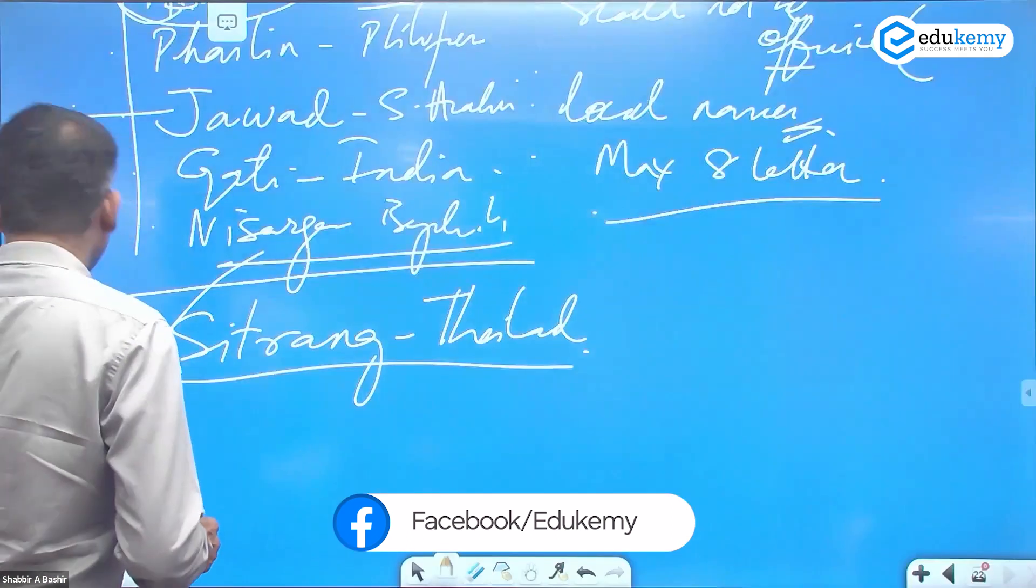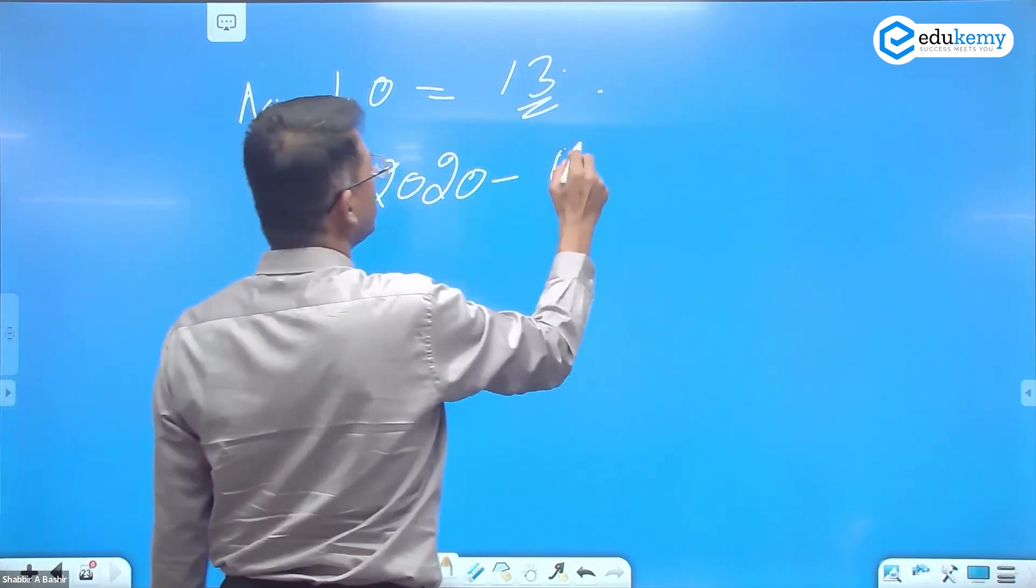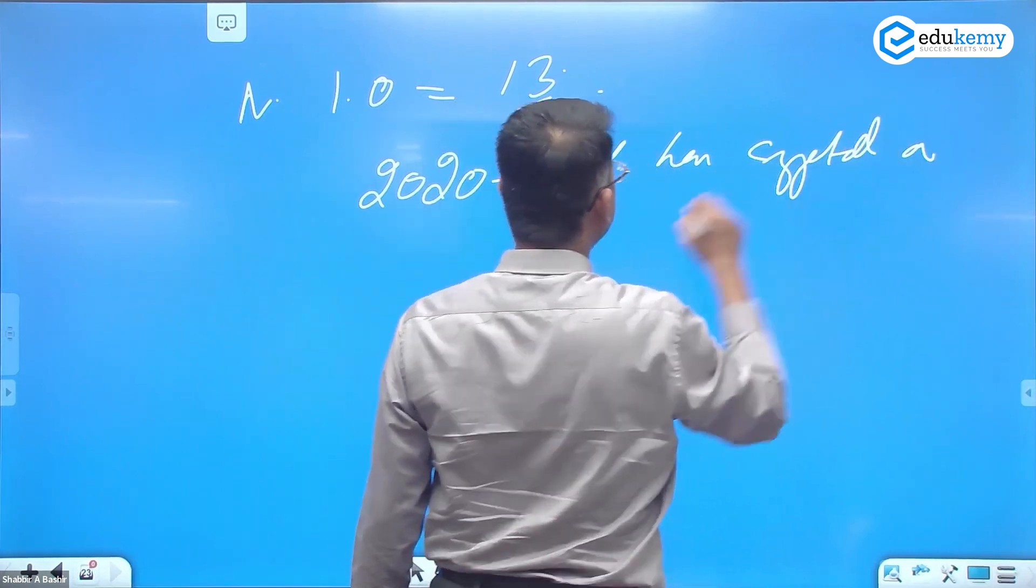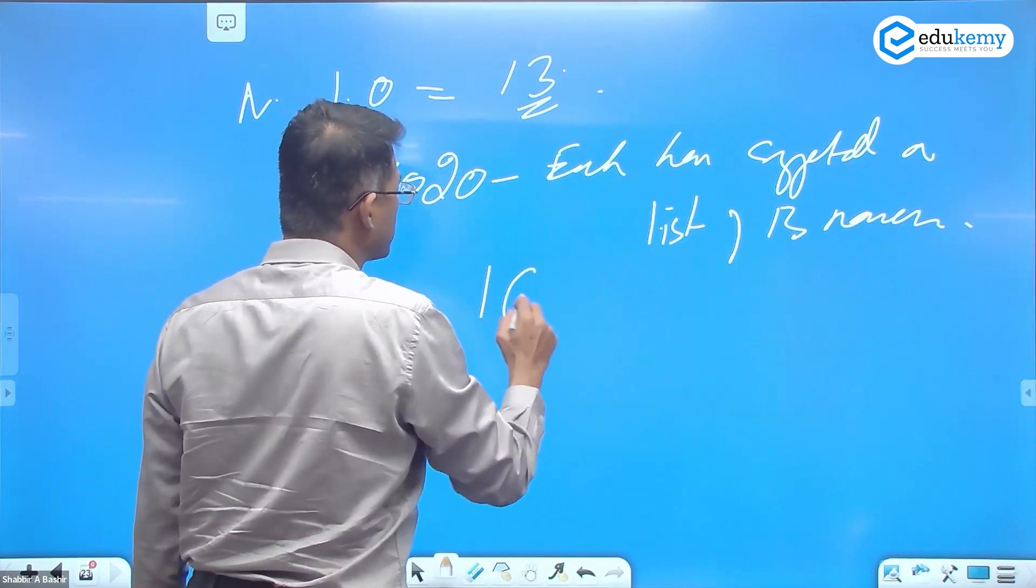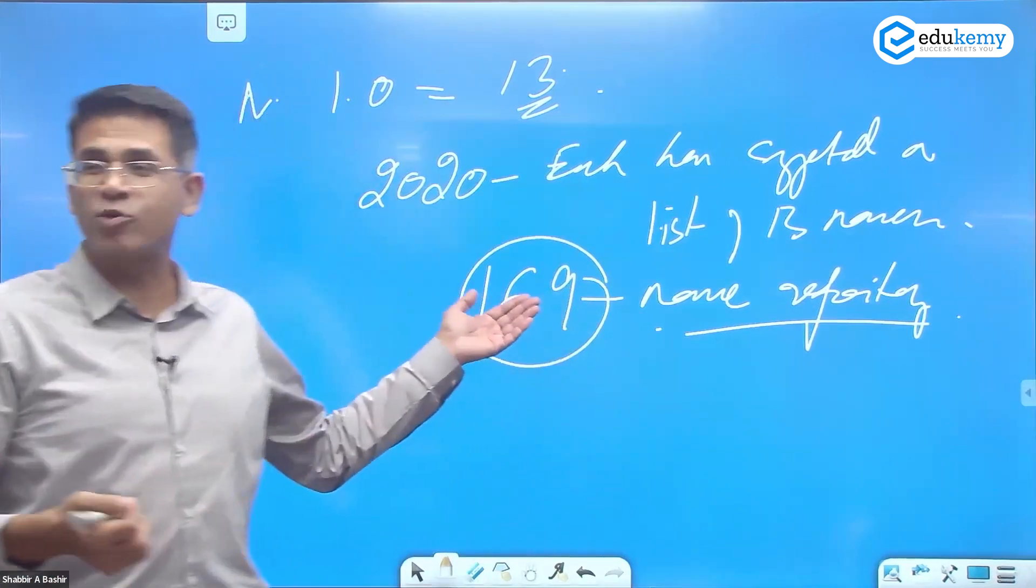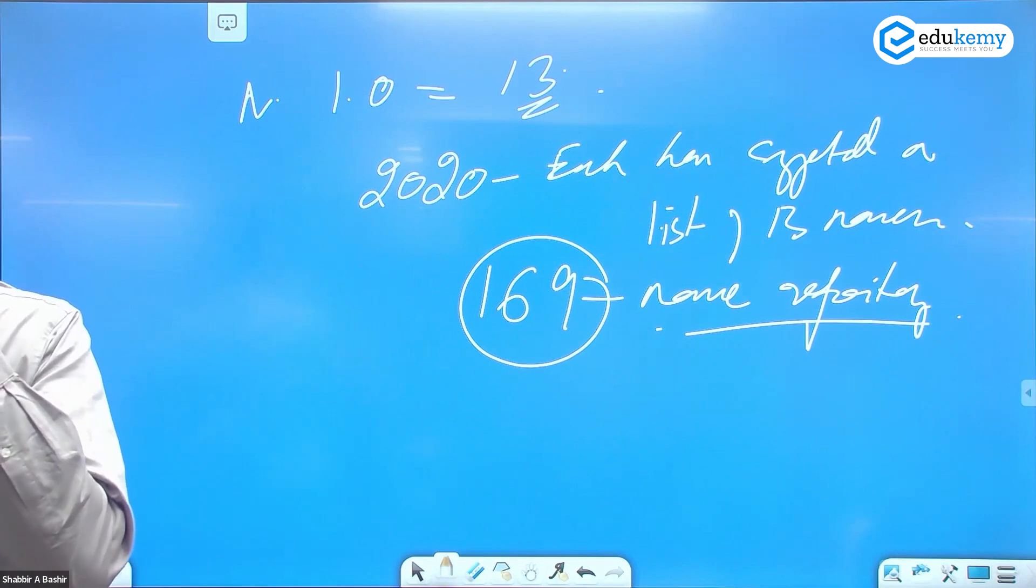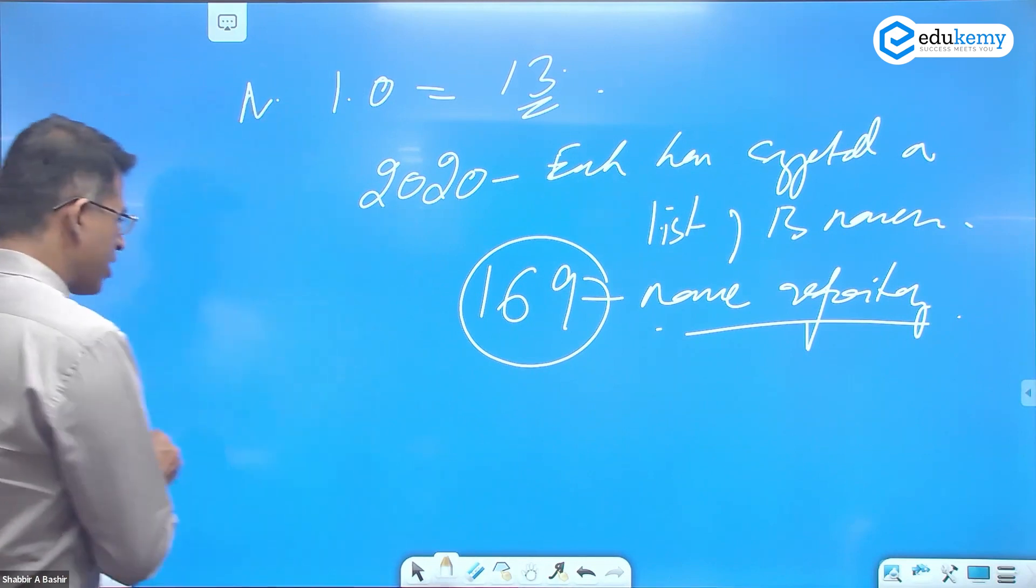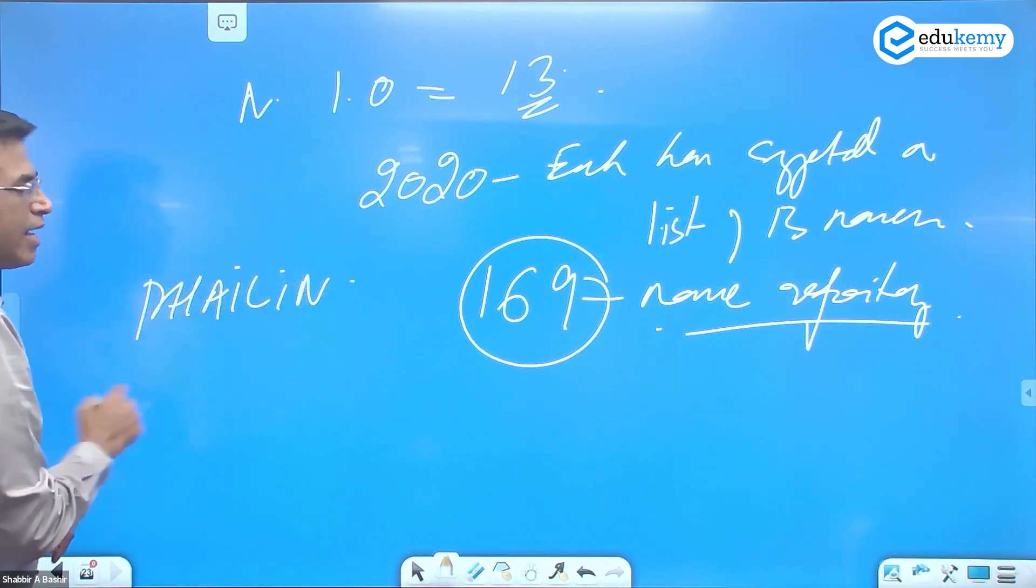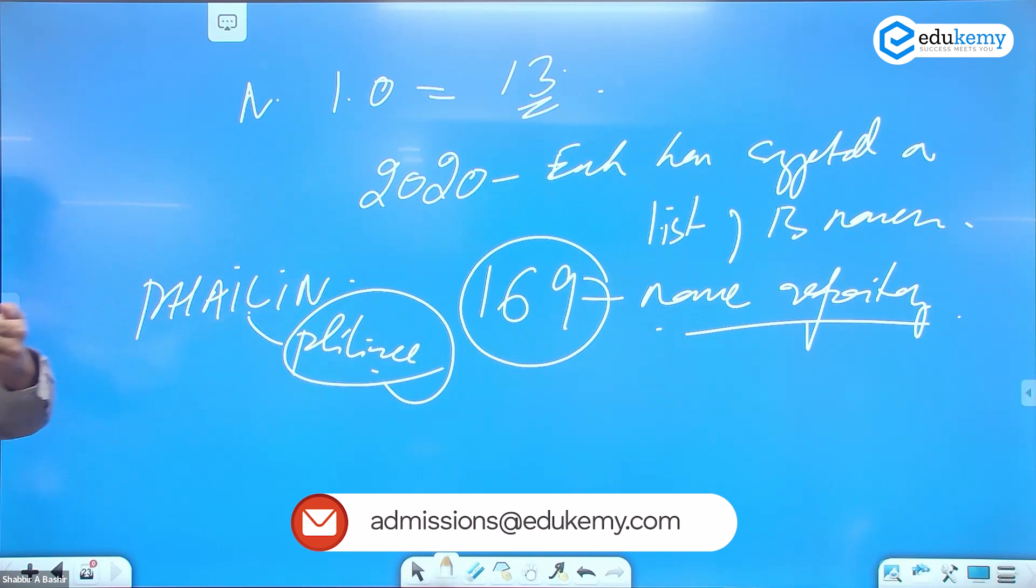In North Indian Ocean, there are 13 countries. In 2020, each has suggested a list of 13 names. So the list has 169 names in the repository. Hopefully it'll last us 200-300 years. Imagine if these names finish in 2 years - how many cyclones would we have had? The naming happens where the cyclone originates. I remember philin had come towards India, but this was named by Philippines. So it originated in Philippines and moved westwards towards India, on Bay of Bengal also.